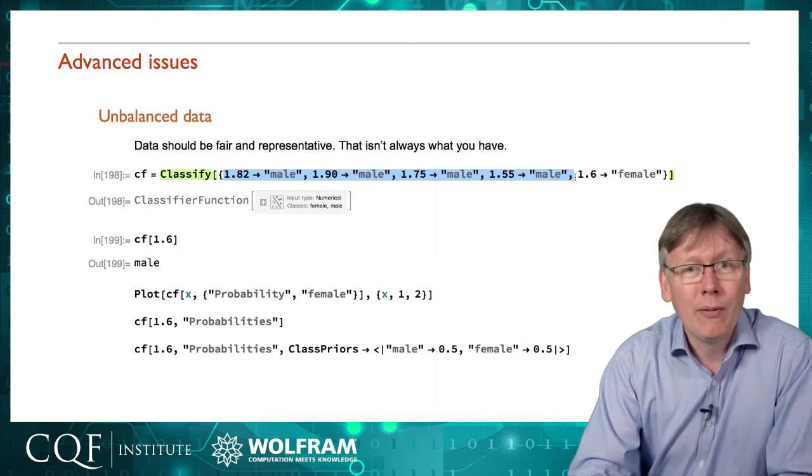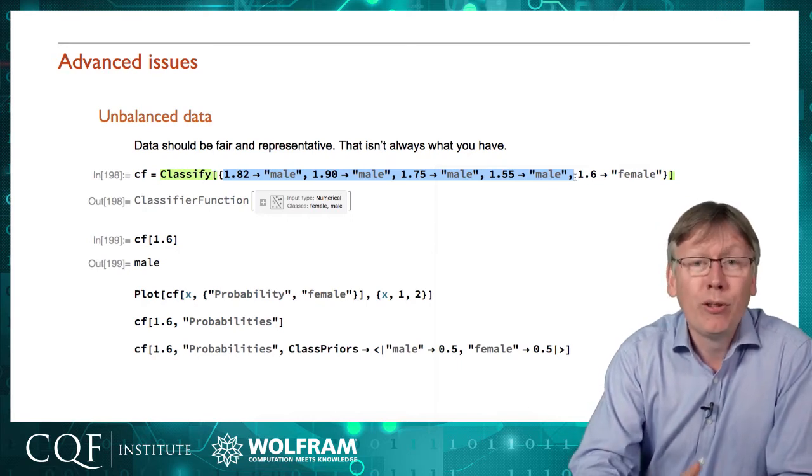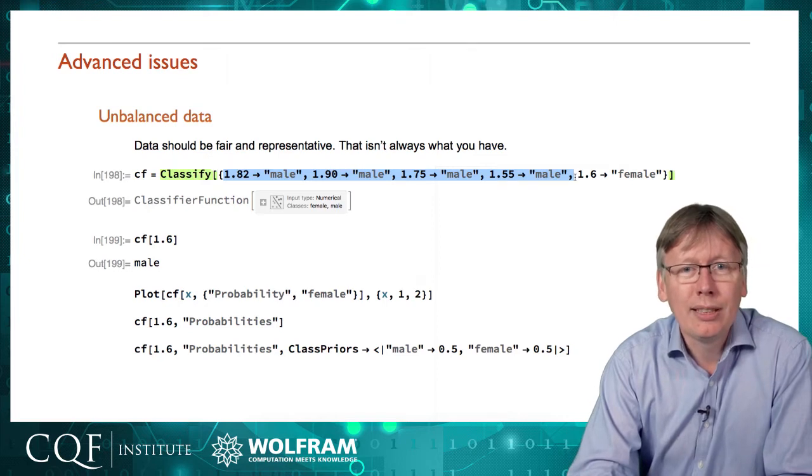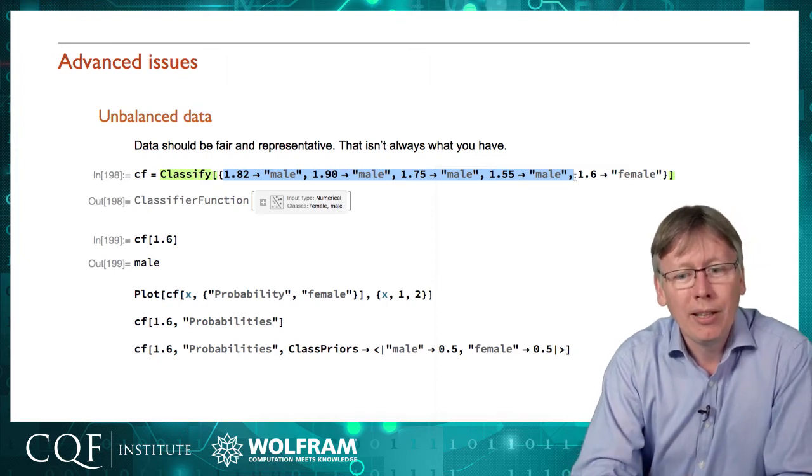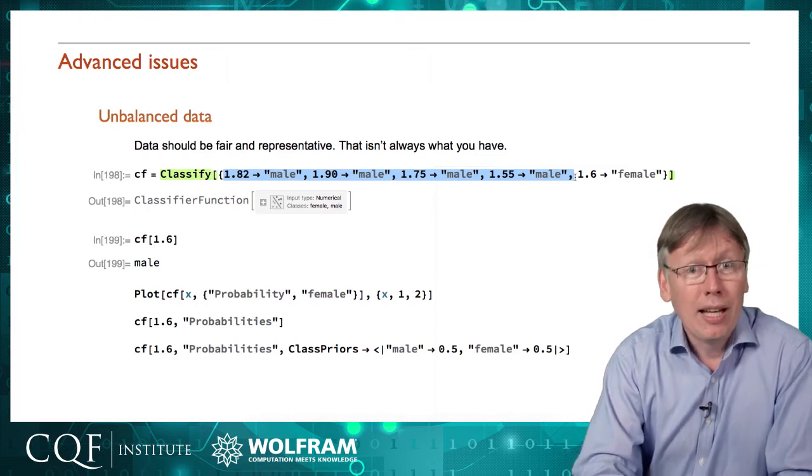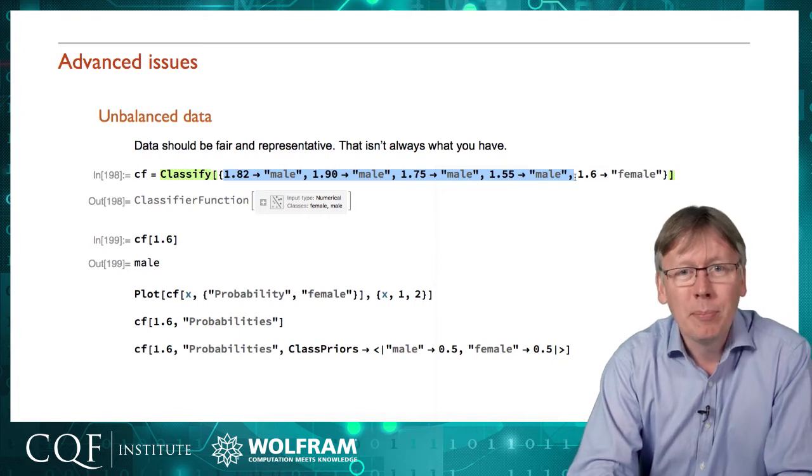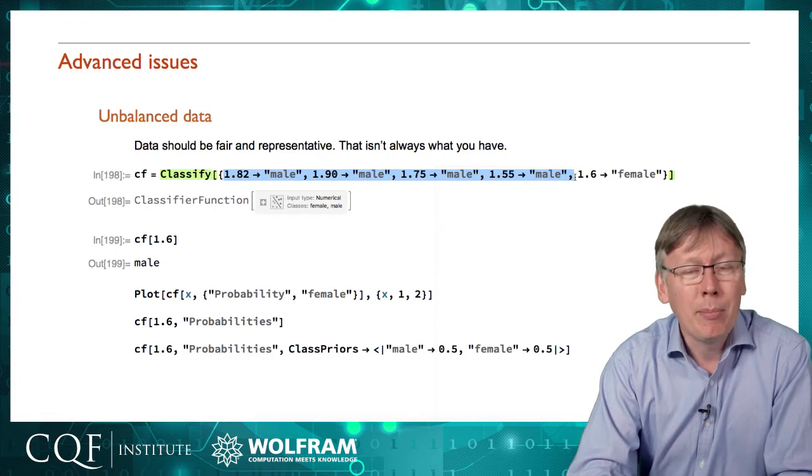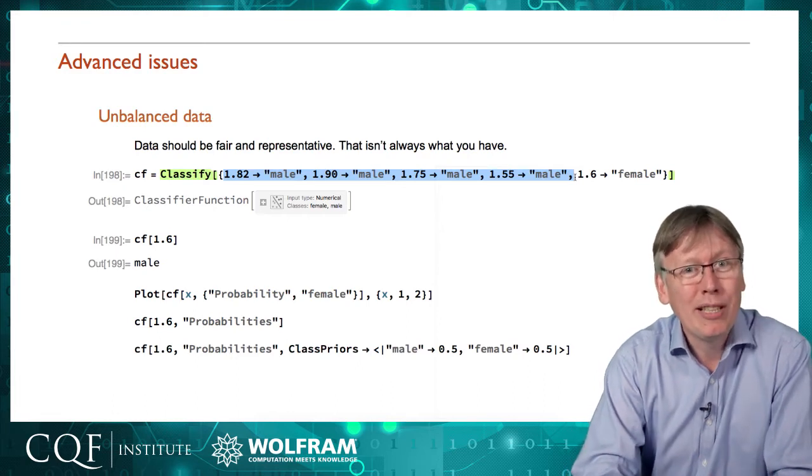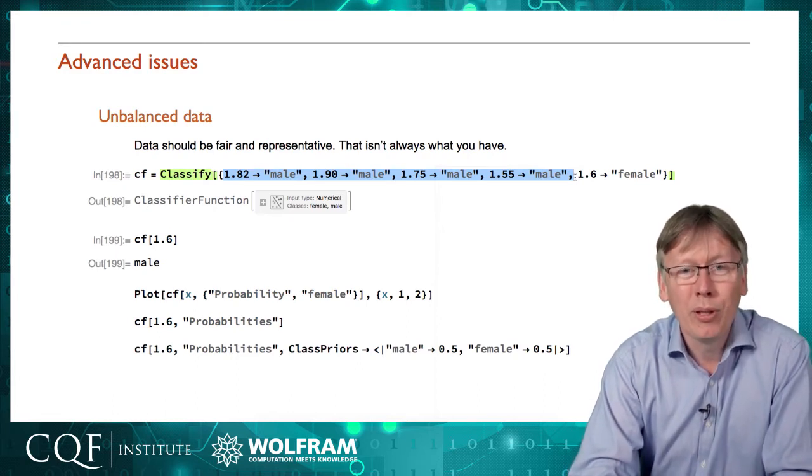So if I ask it a question already even before it's looked at the numbers it knows that the answer is more likely to be male than female. Now there might be contexts where that makes complete sense. If this was predict the height of somebody in the male changing rooms then that would be perfectly reasonable to predict that they're probably male even before you look at their height.